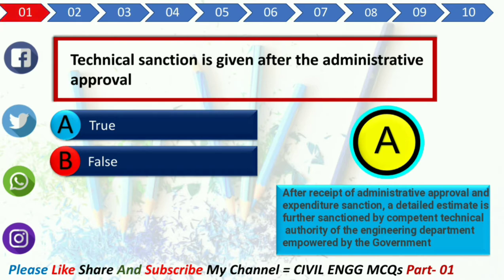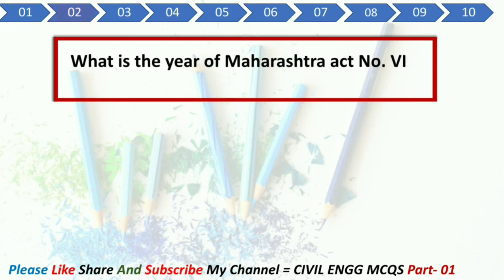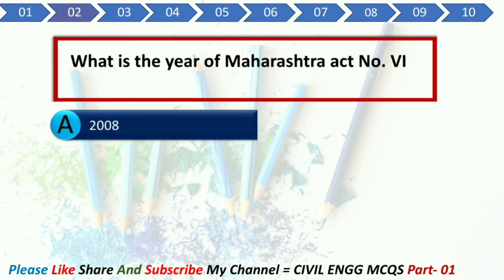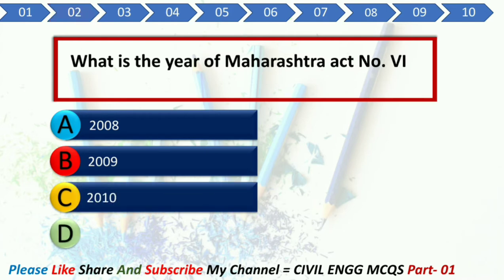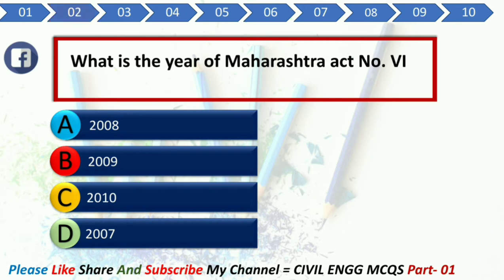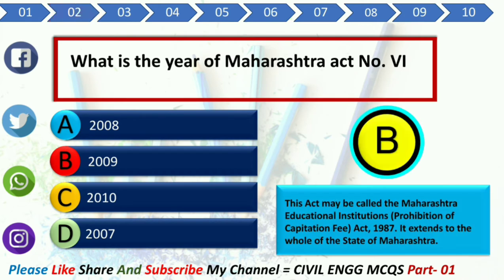Q2. What is the year of Maharashtra Act No. 6? Option A: 2008. Option B: 2009. Option C: 2010. Option D: 2007. Your correct answer is Option B. Explanation: This act may be called the Maharashtra Educational Institution Prohibition of Capitation Fee Act No. 1987. It extends to the whole of the state of Maharashtra.